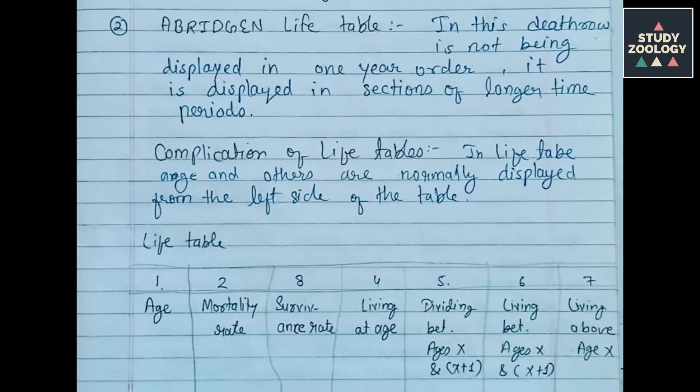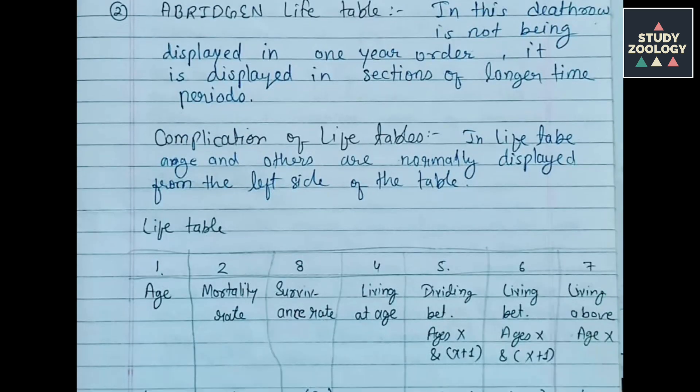Columns of Life Tables: In a Life Table, age and other data are normally displayed from the left side of the table.